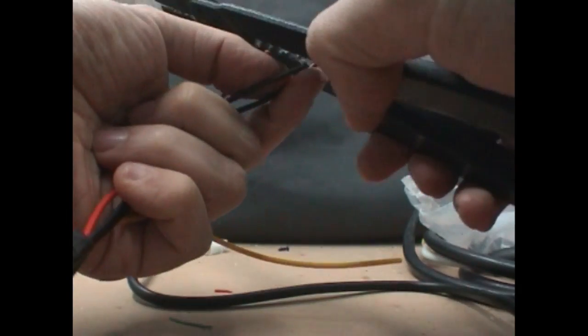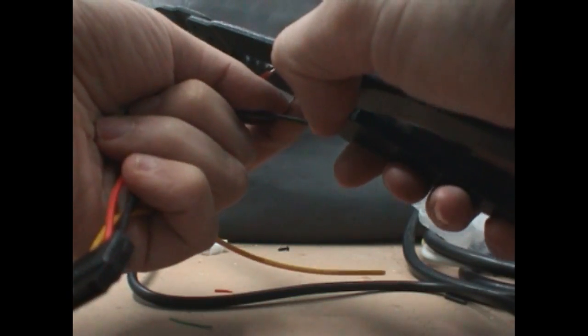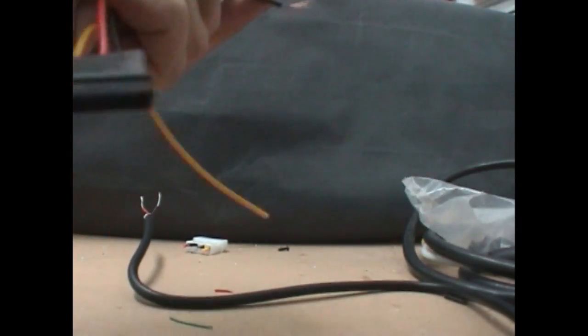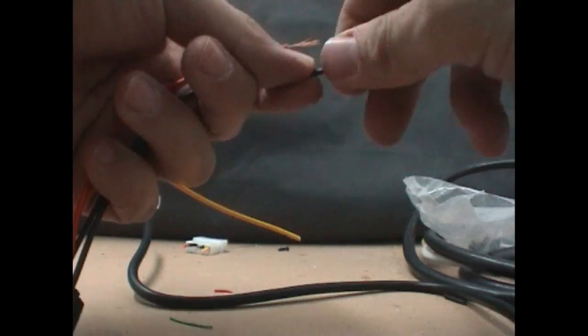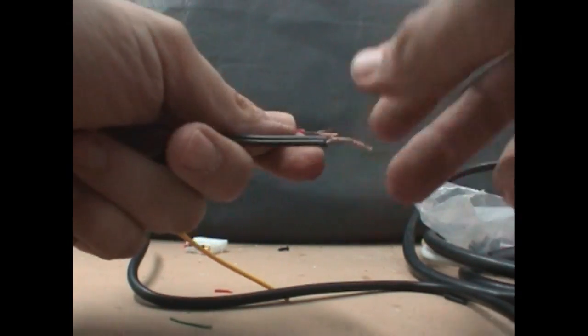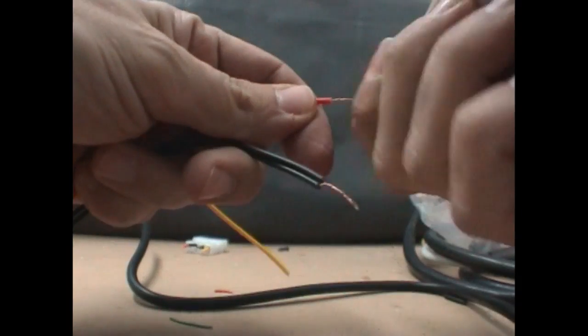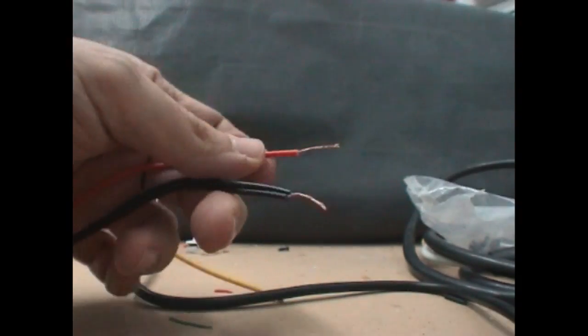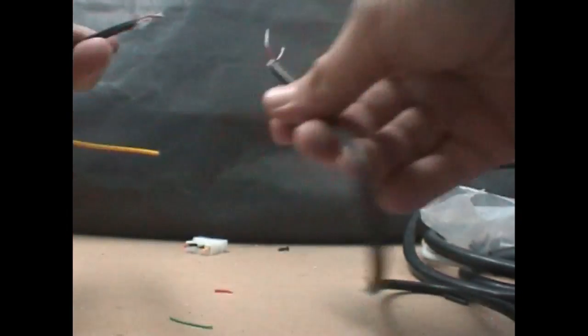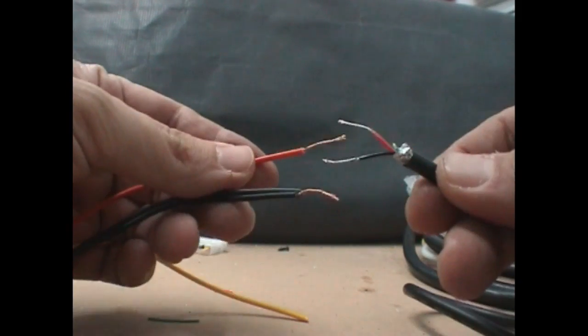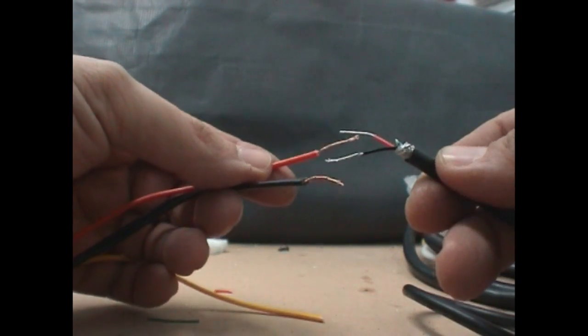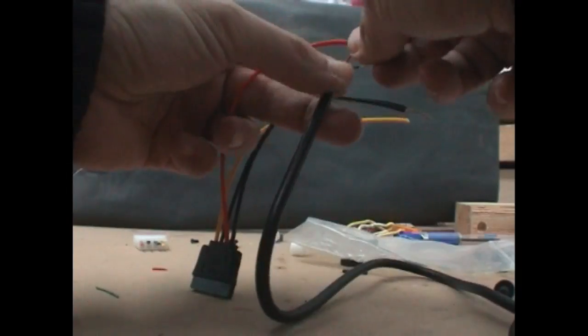We peel both blocks and we have the negative and positive. We will solder it to the negative and positive to the USB.